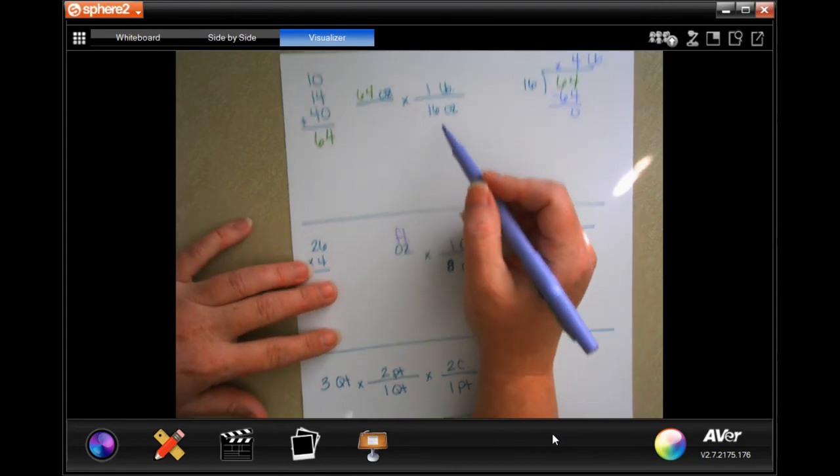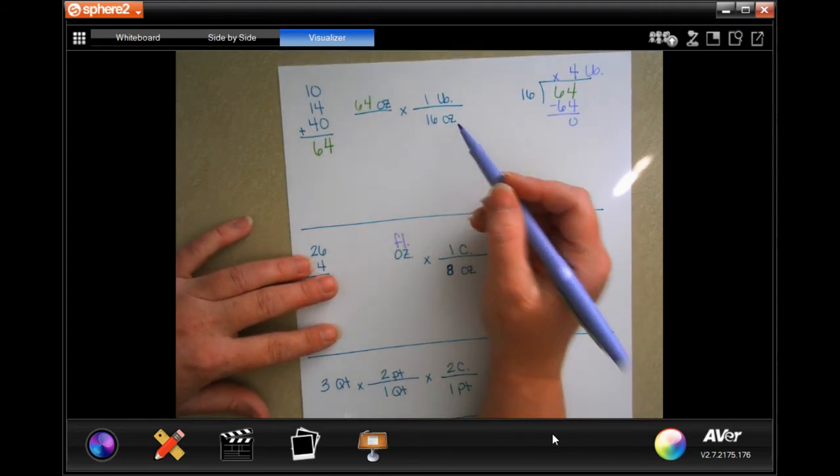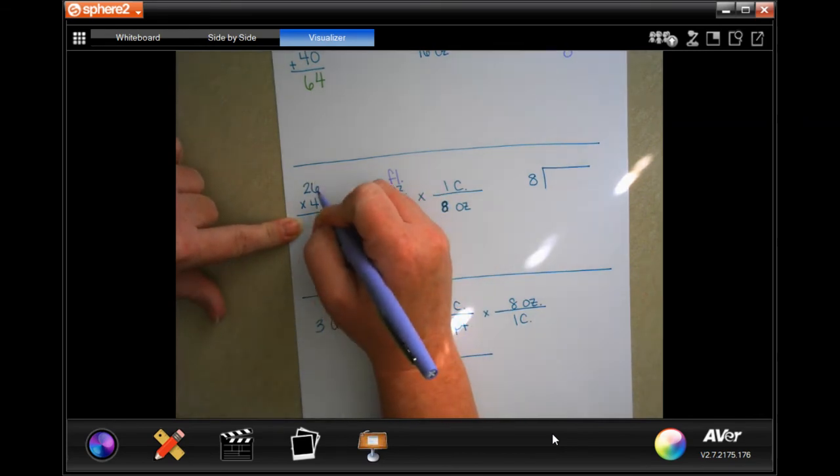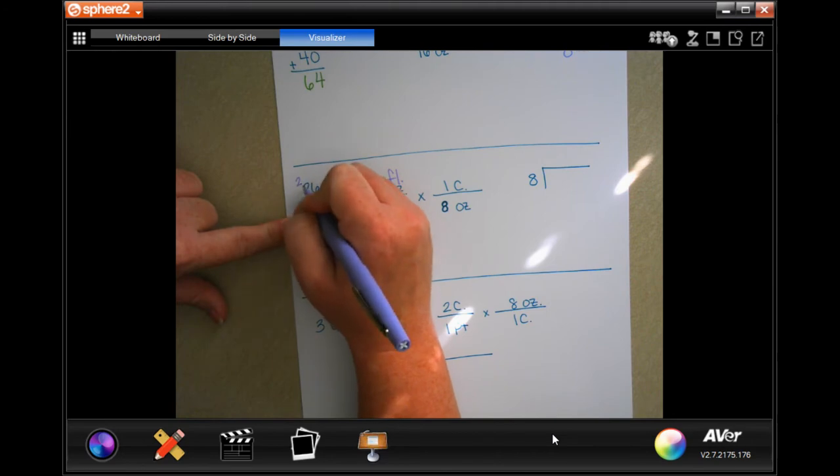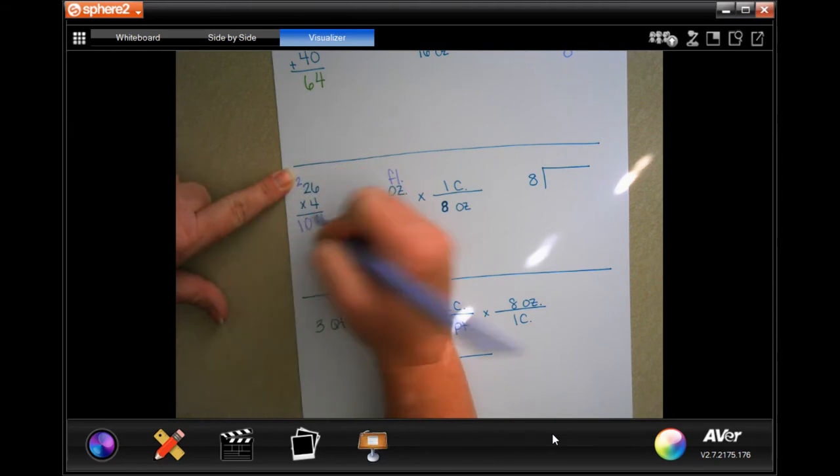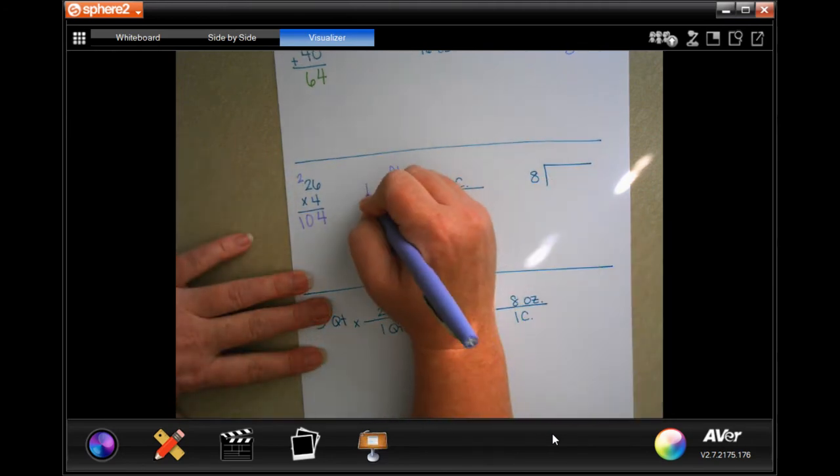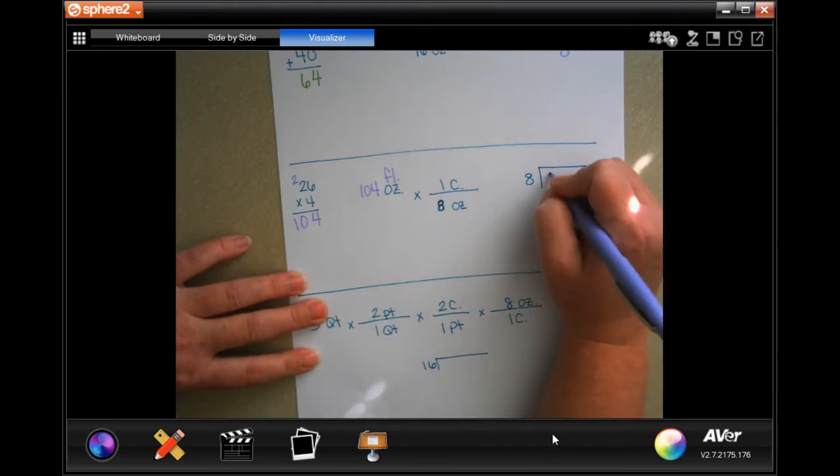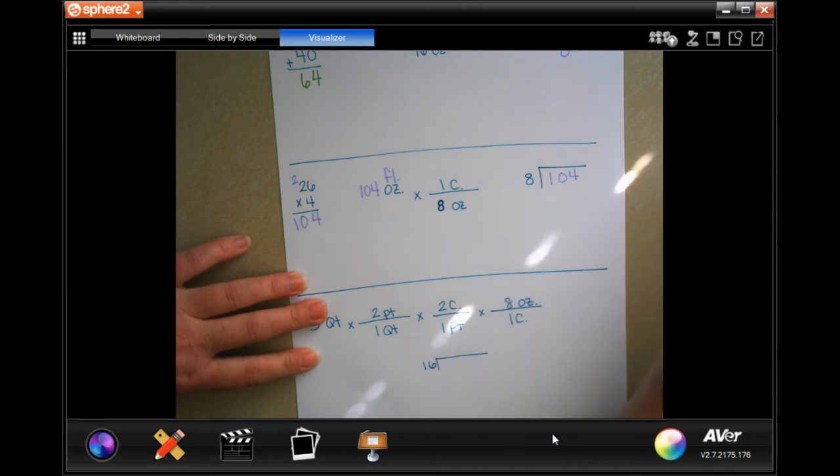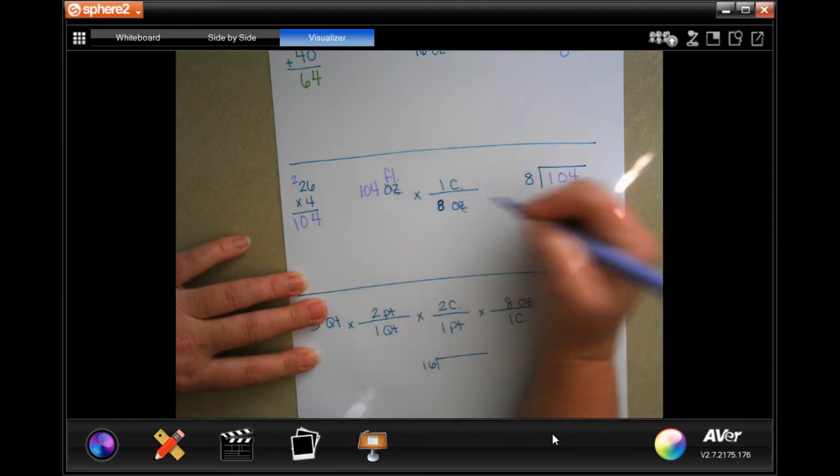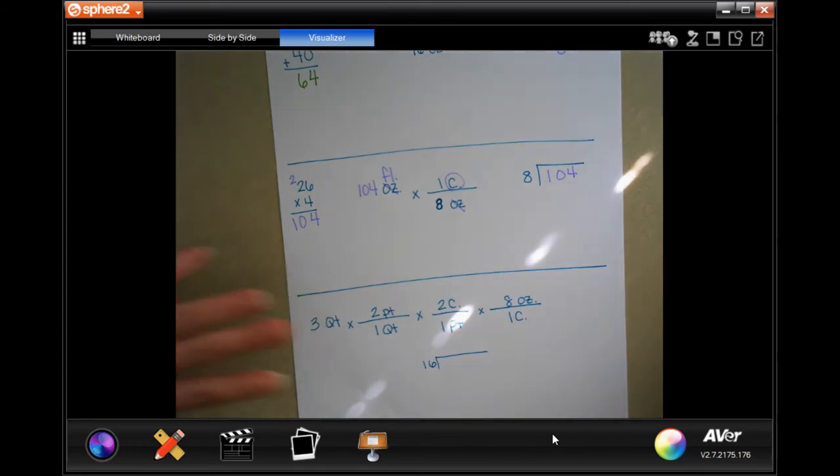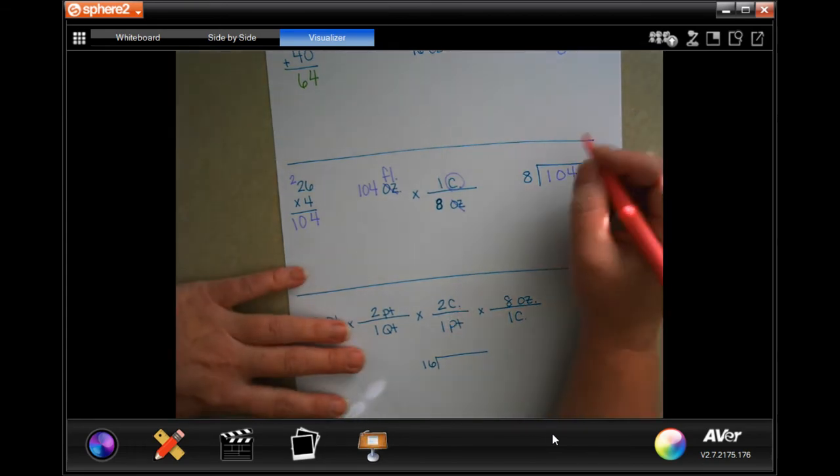First, let's find out how many fluid ounces. Four times 26 is 24, carry the two, four times two is eight plus two. Okay, so 104 fluid ounces. One cup is eight ounces, so we're going to take that 104 and we're going to put it in here because we've canceled out our ounces and we're left with cups, which is exactly what we need.